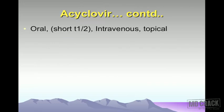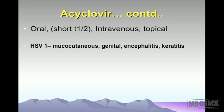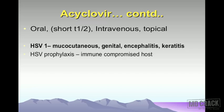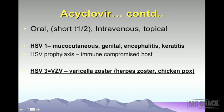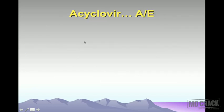Acyclovir is given orally with a short half-life requiring five times daily dosing. It is also given intravenously and by topical administration. Uses include HSV-1 (mucocutaneous herpes, genital herpes, herpes encephalitis, keratitis), HSV prophylaxis in immunocompromised hosts, and HSV-3 (varicella zoster — herpes zoster and chickenpox).